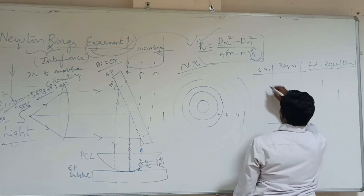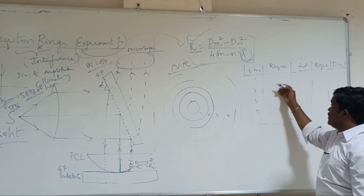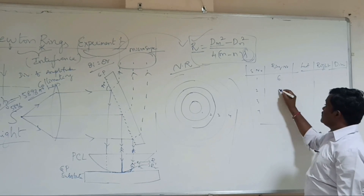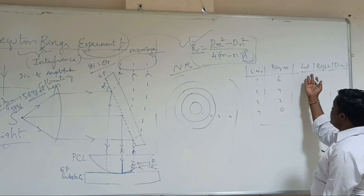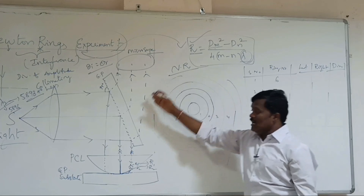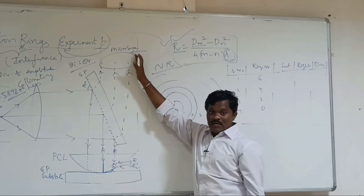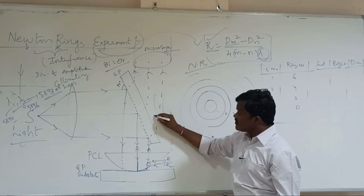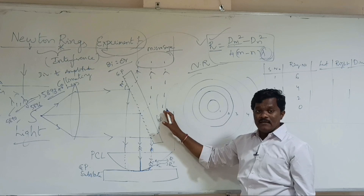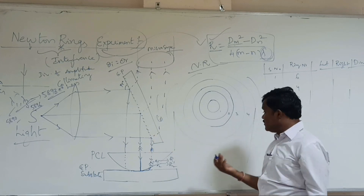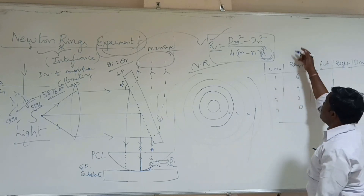For example, if you go to the left side with serial numbers 1, 2, 3, 4, the ring number may be 6, 4, 2, 0. If you go to the left side, the first is the 6th ring. Move the traveling microscope to the 6th ring, then take the reading. I'm not going to discuss the reading procedure in detail here, but I can tell you in the next video.